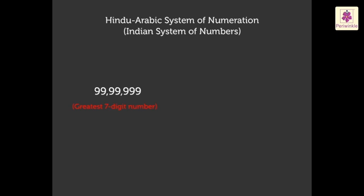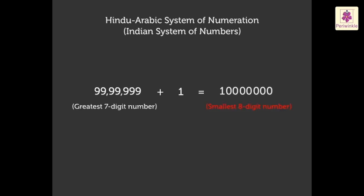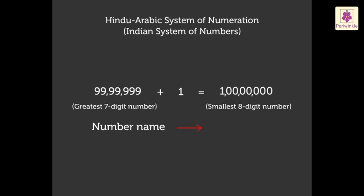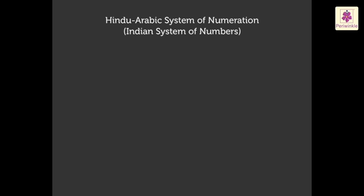The greatest seven digit number is ninety nine lakh, ninety nine thousand, nine hundred and ninety nine. When one is added to it, we obtain the smallest eight digit number. We write it as 1,00,00,000 and we read it as one crore.